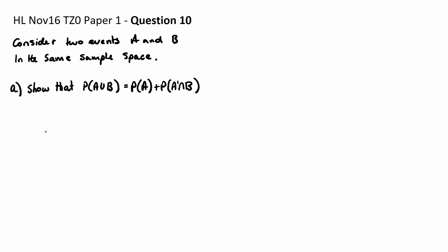In part A, it says show that the probability of A or B is equal to the probability of A plus the probability of not A and B.